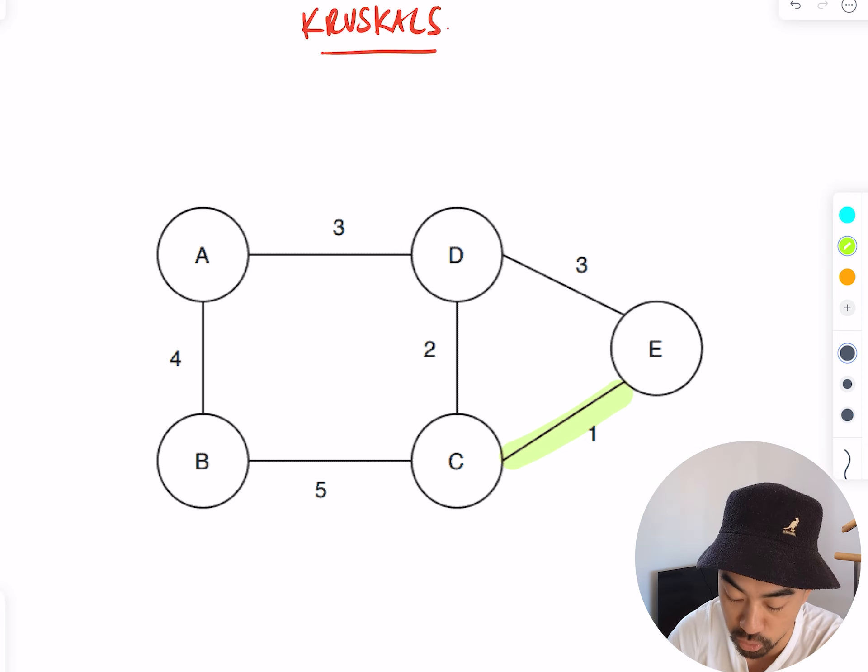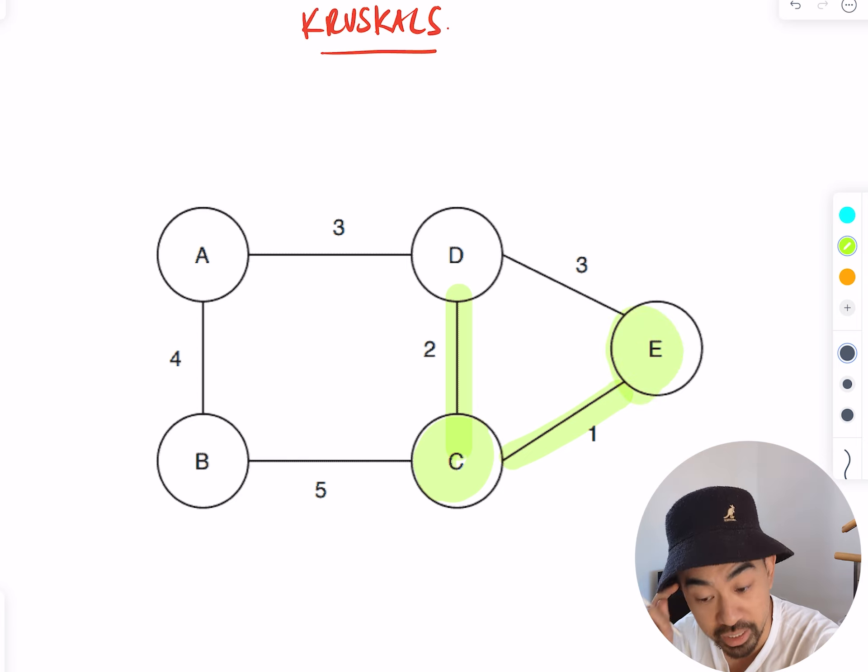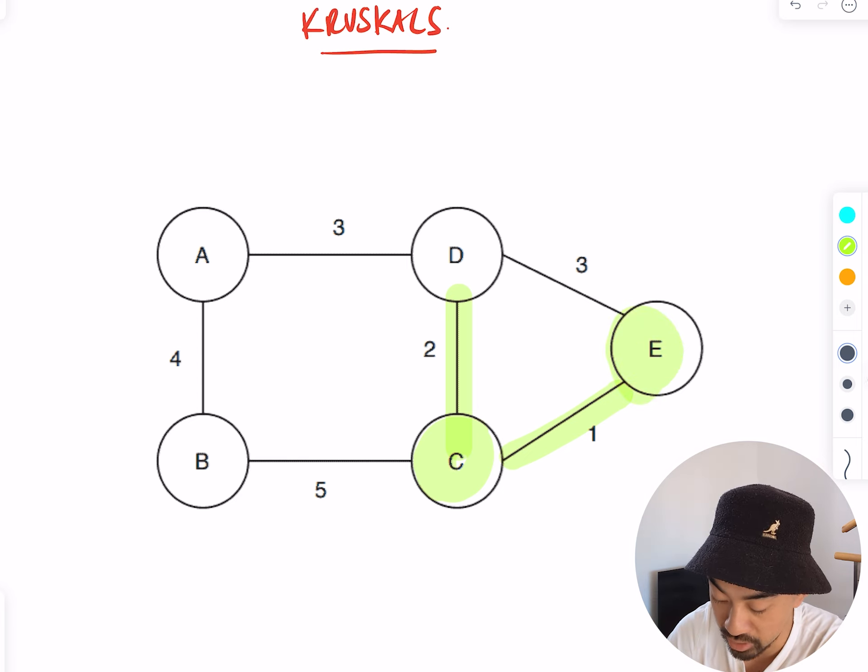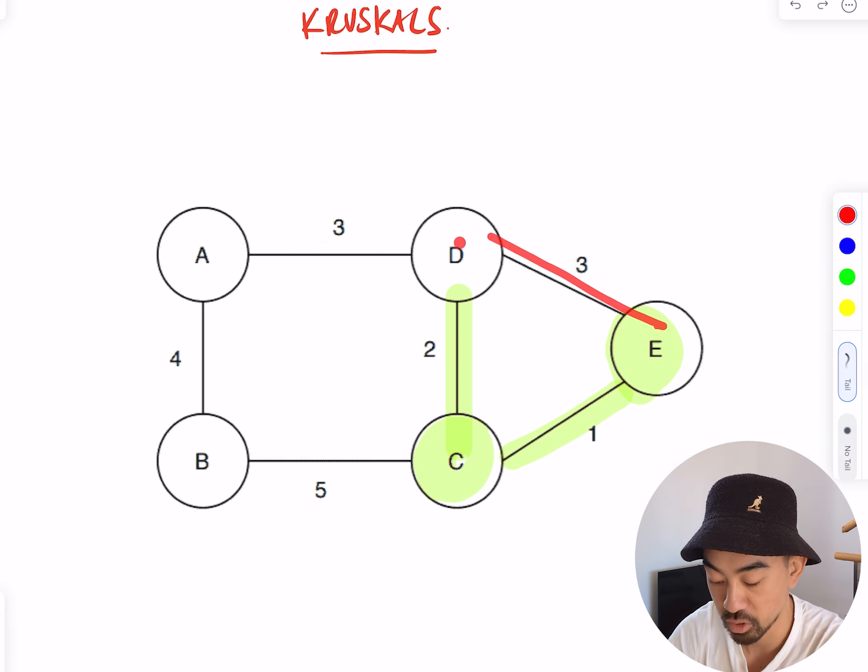The next smallest edge is going to be two. I'll highlight that there. Now the next smallest edge I've got to connect is either the threes, so this one or this one. I can't connect this one because it's going to form a loop and you're not allowed to do that, so I have to highlight this one.